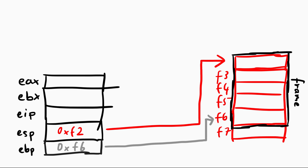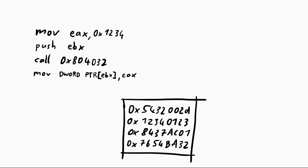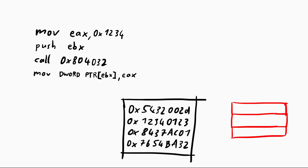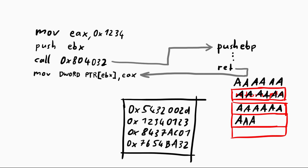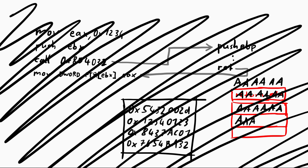For beginners this might already feel complicated — there is code, data, a stack, a heap, functions you can call, functions that can return, a return pointer on the stack you can override with a buffer overflow, and a lot of different terms. But it's a lot less complex than it may sound.